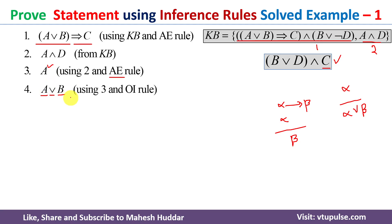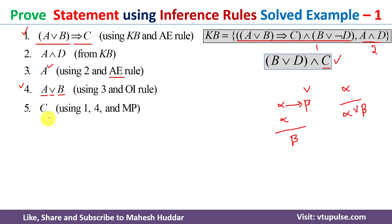Since A is already true, irrespective of B, the entire statement A or B is true. Now if you look at statement 4 and statement 1, we can apply the modus ponens rule. What we get is C. So I have applied modus ponens on statements 1 and 4 and obtained C, which is what is required in the conclusion.